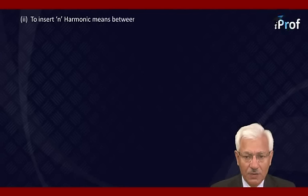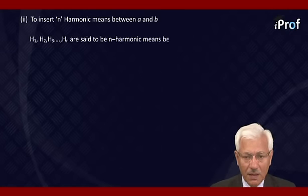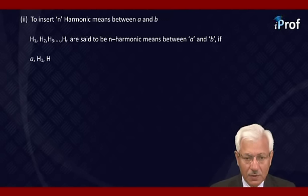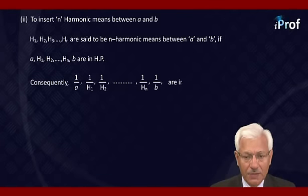Next, we insert n harmonic means between A and B. That is, if H1, H2, H3, ..., Hn are n harmonic means between A and B, then A, H1, H2, ..., Hn, B are in HP. Conversely, one upon A, one upon H1, one upon H2, and so on up to one upon Hn, one upon B are in AP.